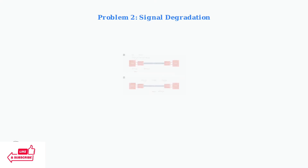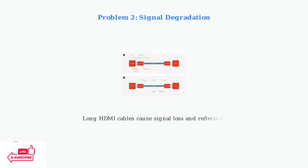Signal degradation occurs when HDMI cables are too long. As shown in this diagram, signals weaken over distance and can experience reflection, leading to poor image quality or complete signal loss.